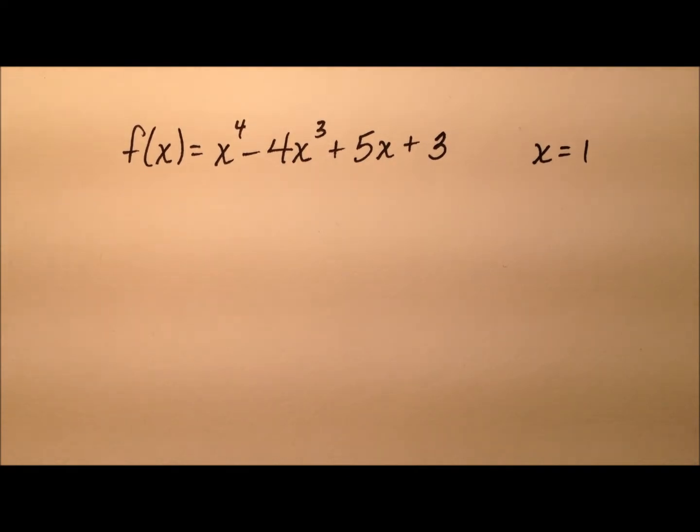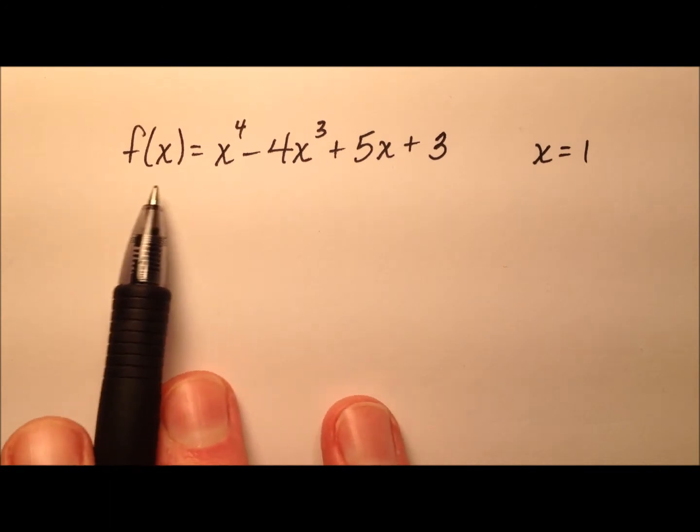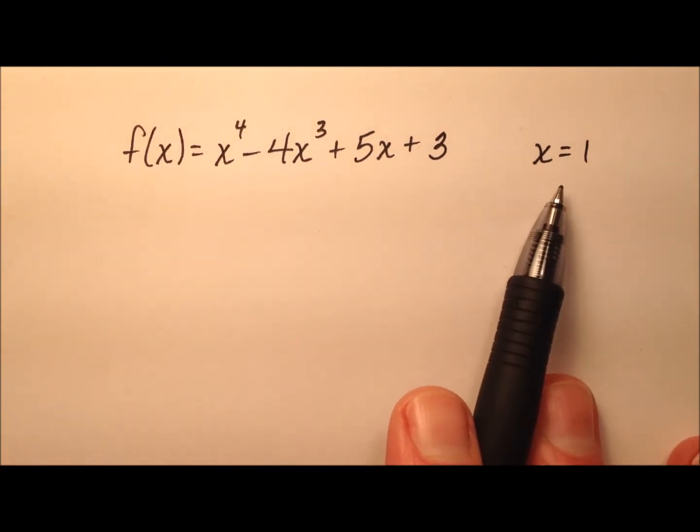In this example, I'm going to write an equation for the tangent line to the graph of f at x equals 1. So in order to write an equation of a line, I need two pieces of information: I need a point that it passes through, and I need its slope.